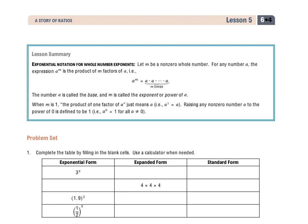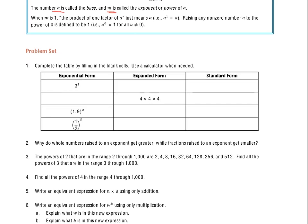Hello everyone, this is grade 6, module 4, lesson 5, problem set. You see our lesson summary here — it's going to tell us about exponential notation for whole numbers. I really recommend taking a quick look through this to see what these different pieces are called. The 'a' in this equation is the base and the 'm' is the exponent, meaning how many times you're going to multiply the base 'a' by itself. Keep that in mind as we start looking at some of these questions.